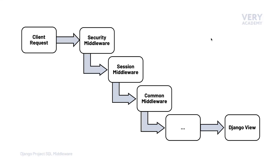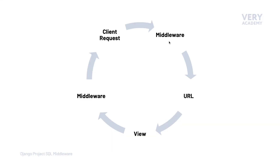Although we discuss this circular request-response approach, it doesn't necessarily mean the request always has to hit the view. A middleware can stop the request from moving over to the view and send a message or information directly back from the middleware to the client.